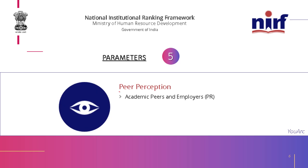The final fifth parameter is Peer Perception, where academic peers and employers are given a detailed survey about the college covering various aspects, providing an overall picture of the college. These five parameters are very important when considering a college. Since most of this information may not be easily available to us, the Government of India takes responsibility in identifying the best colleges. There is a special architecture column ranking 20 best architecture colleges from 1 to 20, and we will now look at their eligibility and admission criteria.